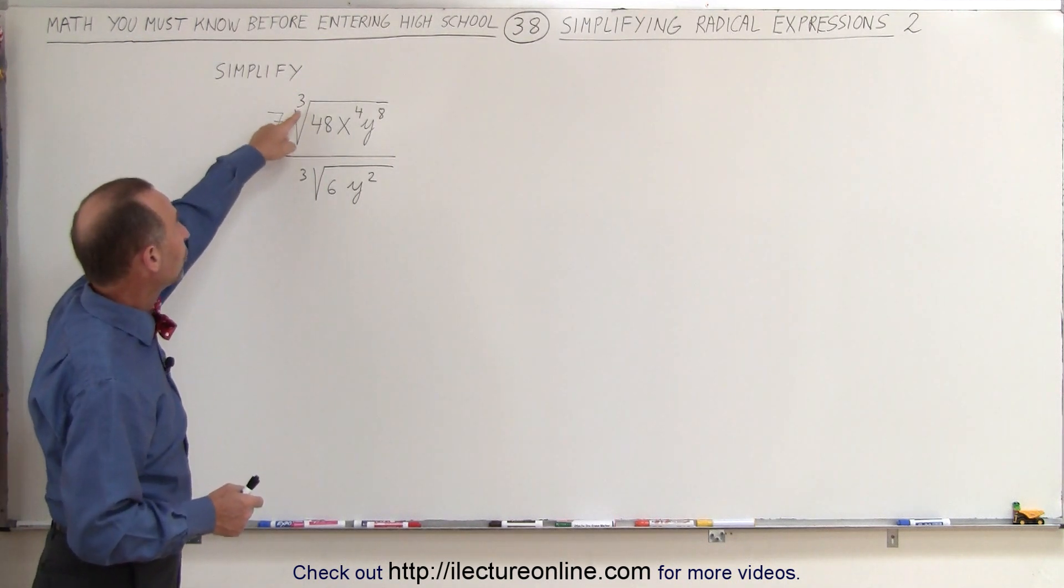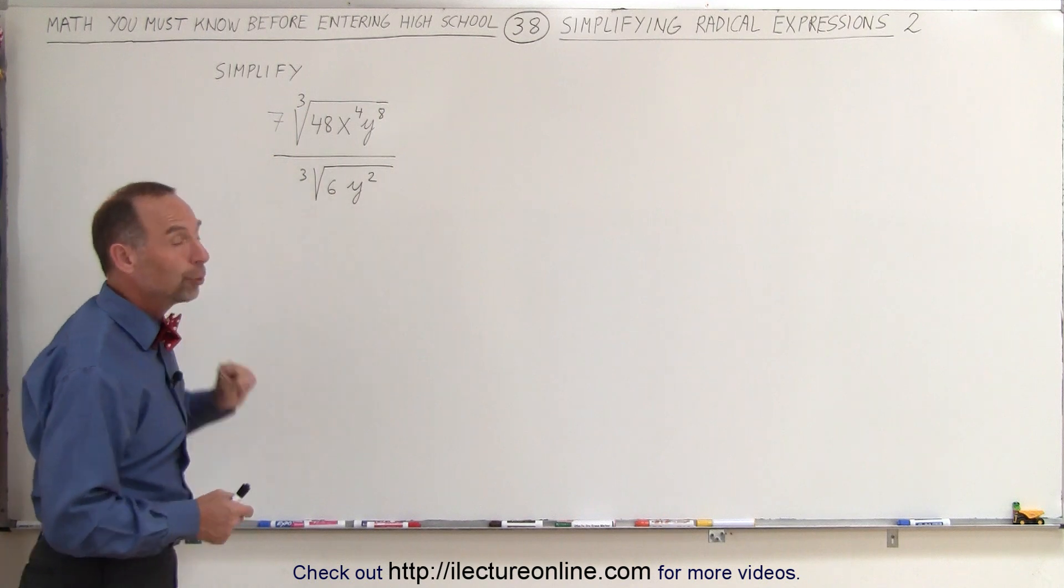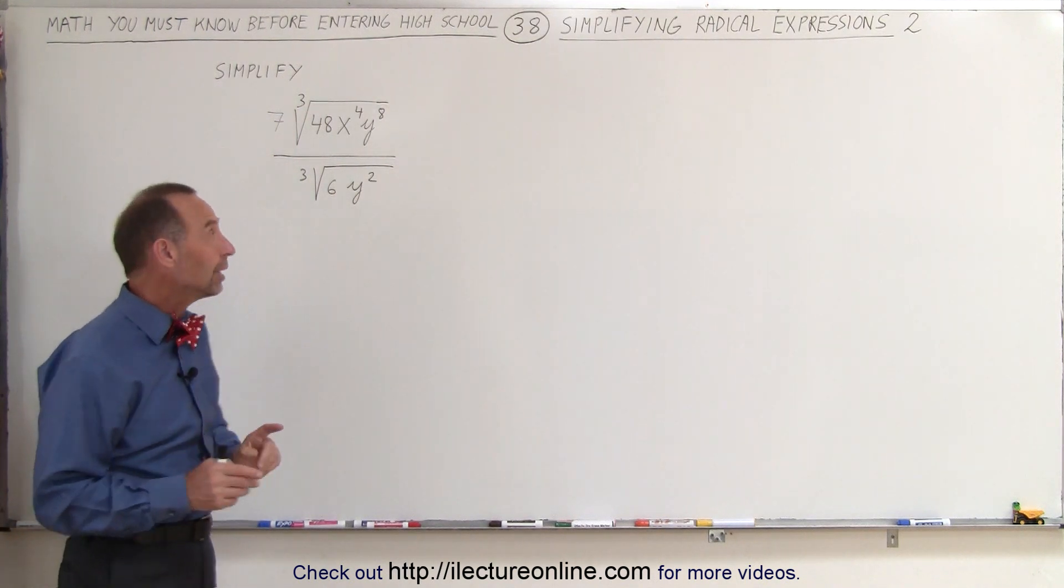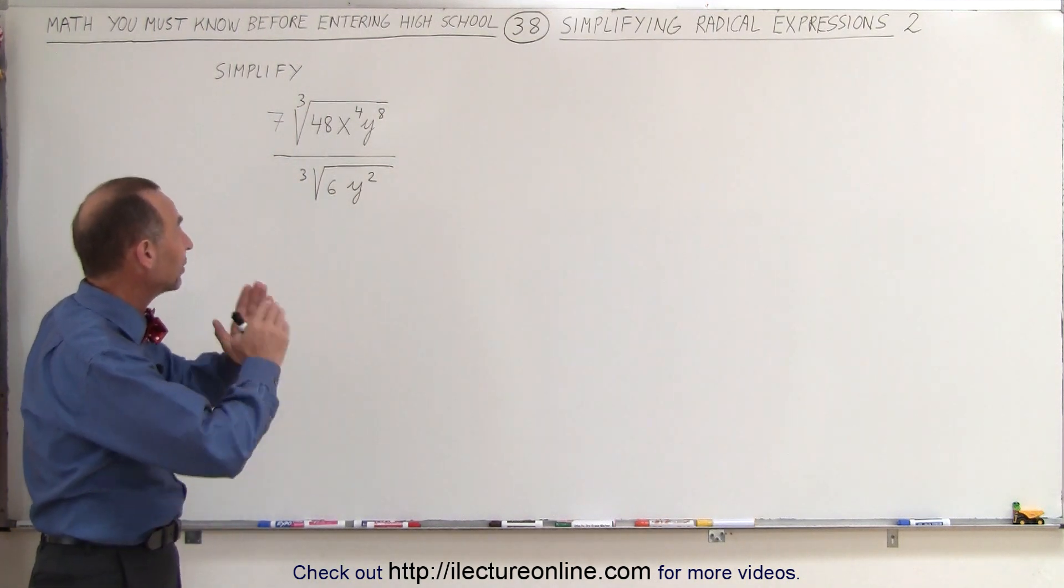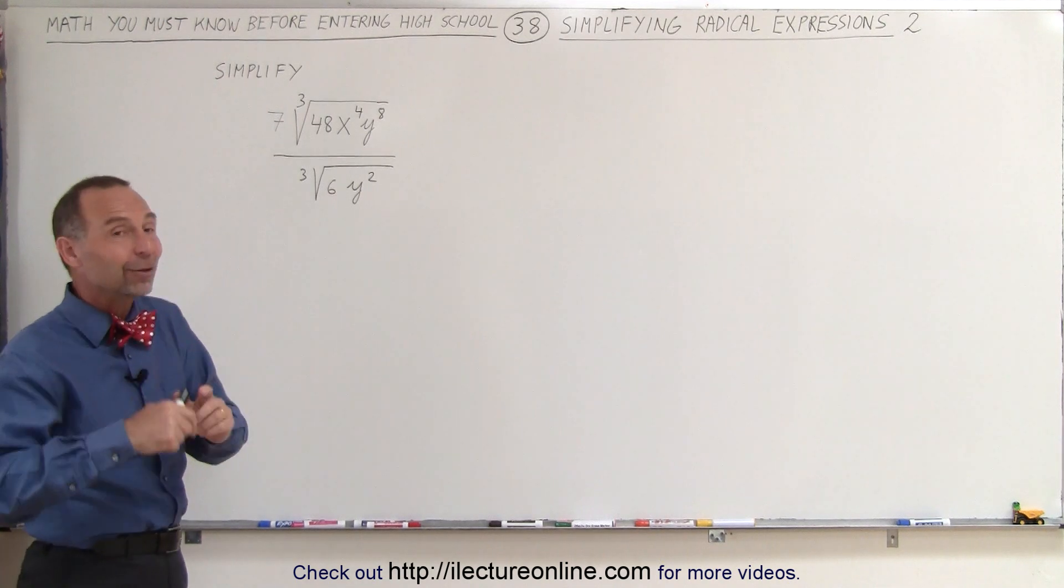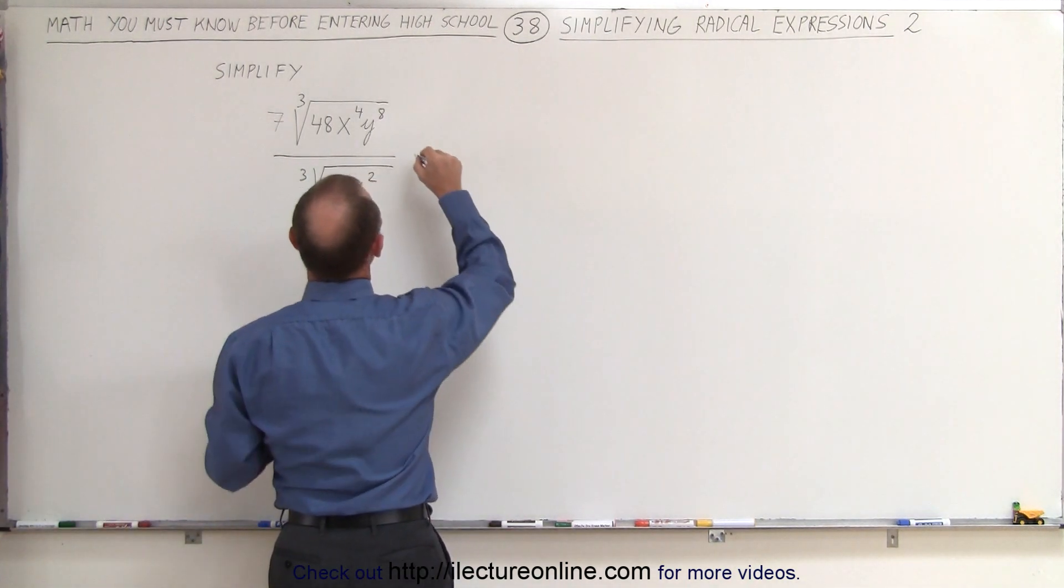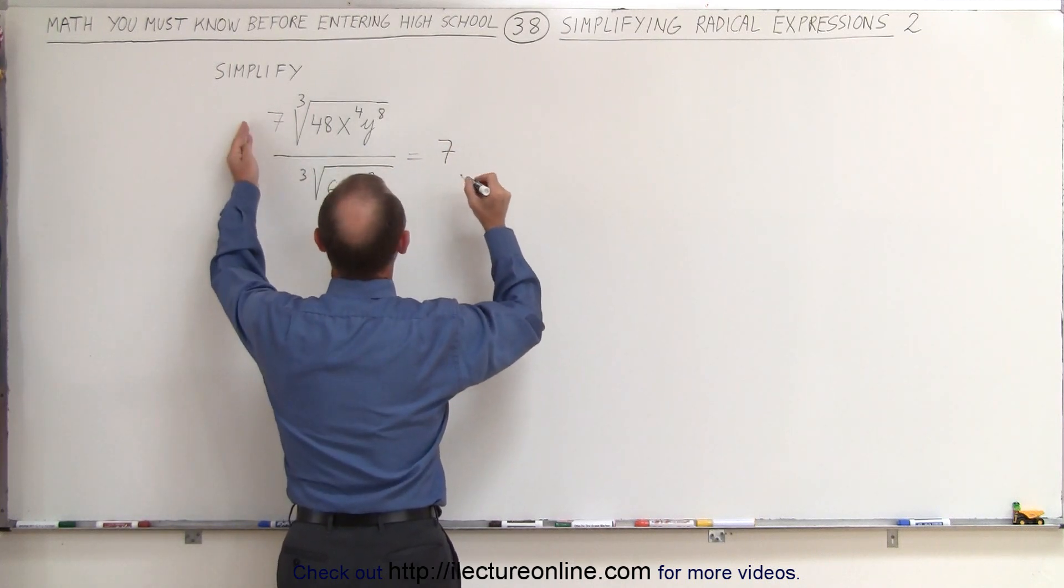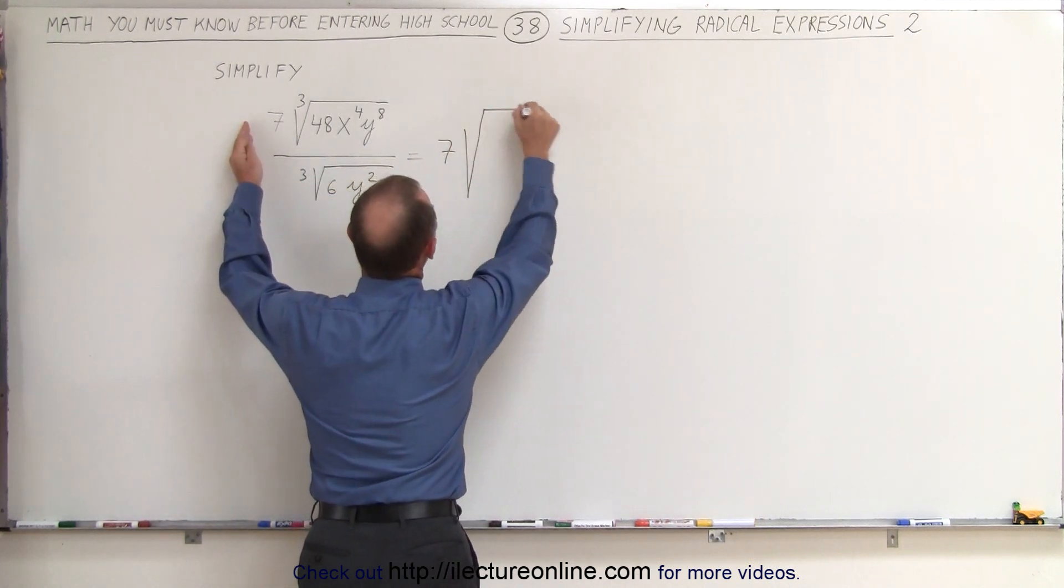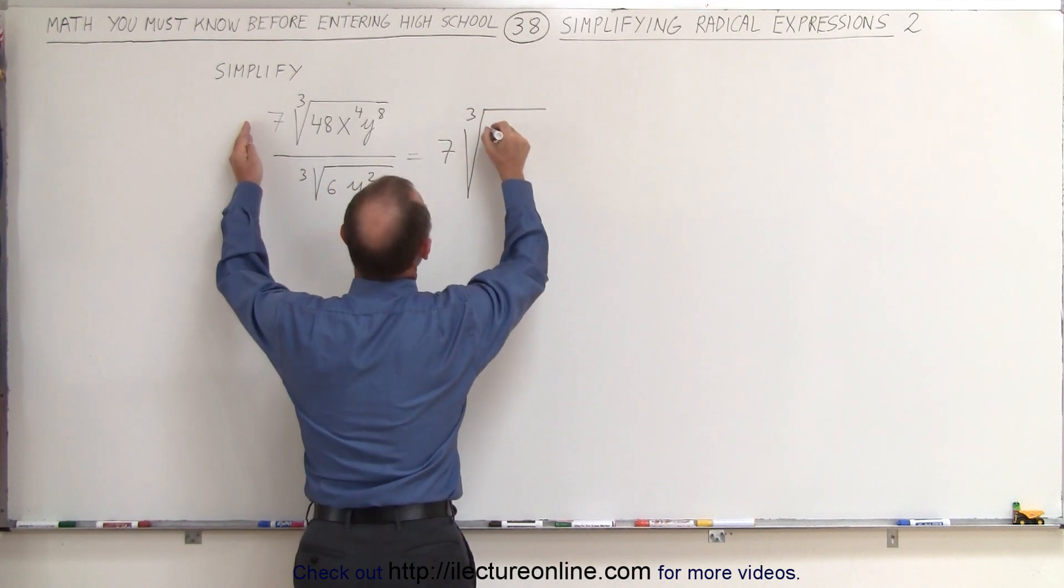Notice that it's the cube root in the numerator and the cube root in the denominator, so what we can do here is write it all under a single radical expression. This can then be written as follows. This is equal to 7, because that's outside the radical symbol,